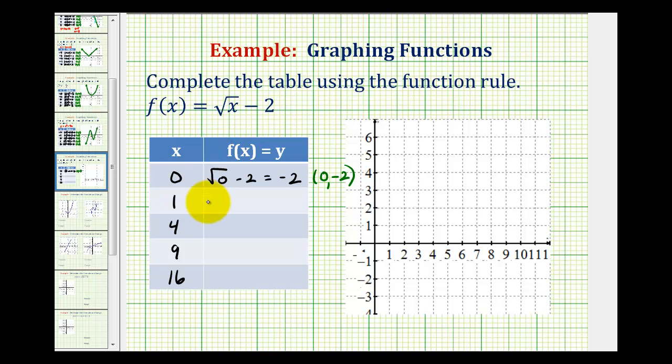When x is equal to one, the function value will be the square root of one minus two. Well, the square root of one is one. One minus two is negative one. So the graph of the function contains the point one, negative one.